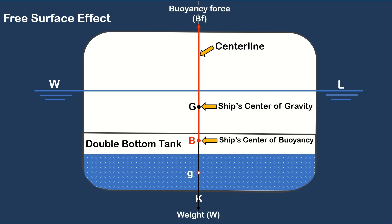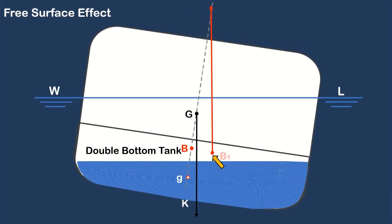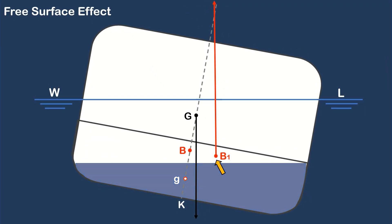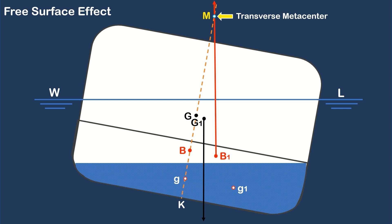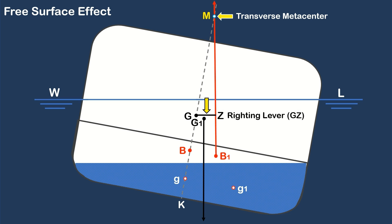When a ship tilts or rolls, the ship's center of buoyancy, capital B, moves to some point at the low side, B1. The liquid within a partially filled tank also tends to move to the lower side, causing a shift of the center of gravity of water inside the tank. As small g moves, the vessel's center of gravity, capital G, also moves parallel to the movement of small g. The point where the buoyancy force and the ship's centerline intersect is called the transverse metacenter, capital M. The horizontal distance between the ship's center of gravity G and the vertical line of buoyancy force is called the righting lever GZ, which determines the ability of the ship to return to its upright position when tilted.